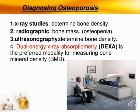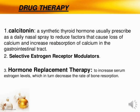The first management therapy is drug therapy. The first medicine is calcitonin, which is a synthetic thyroid hormone usually prescribed as a daily nasal spray to reduce factors that cause loss of calcium and to increase reabsorption of calcium in the gastrointestinal tract. Calcitonin helps promote calcium levels, and calcium is a very important substance for maintaining the strength of bone.